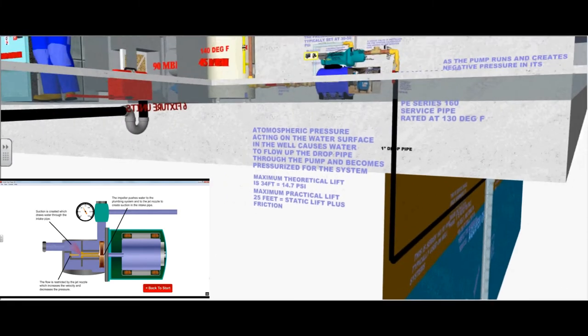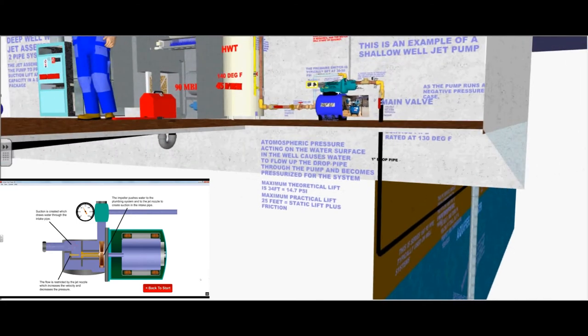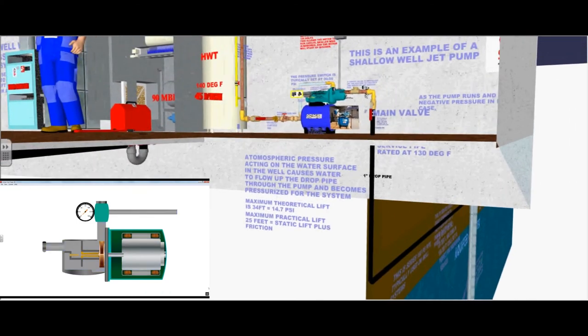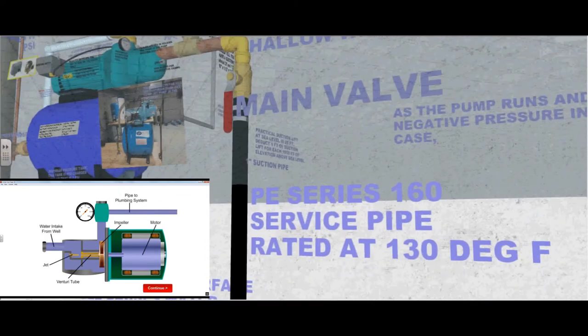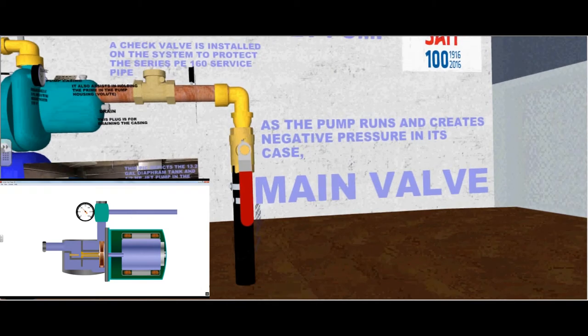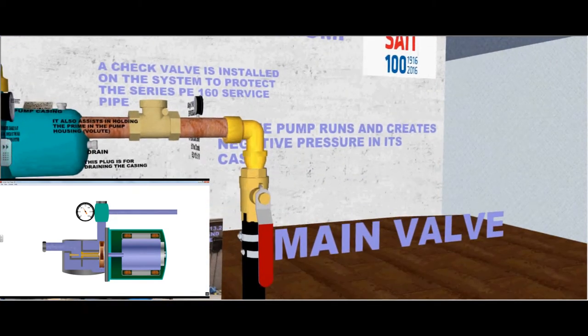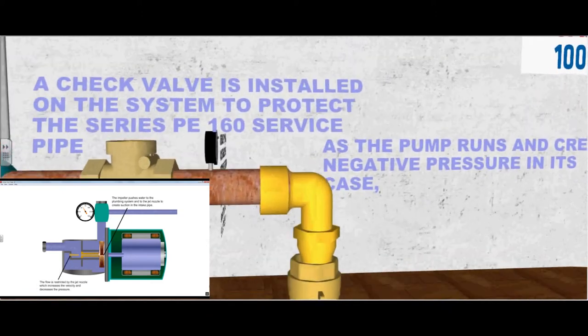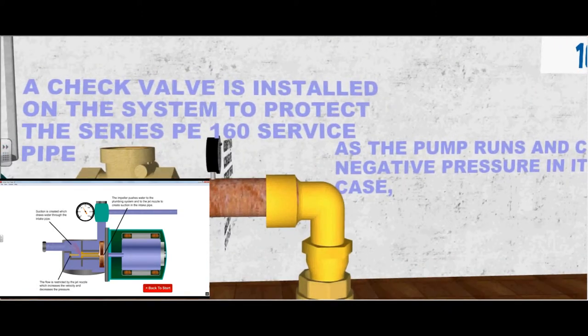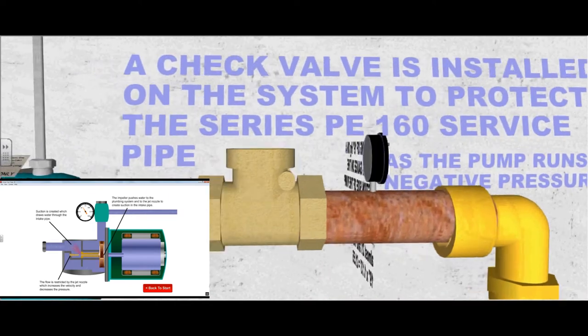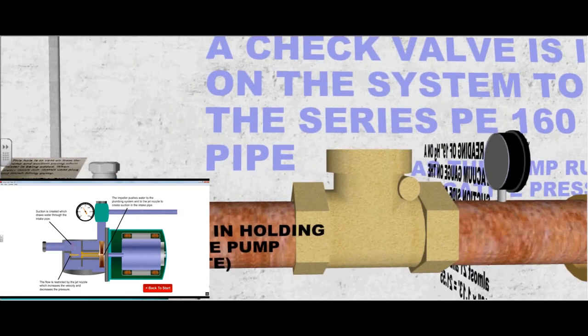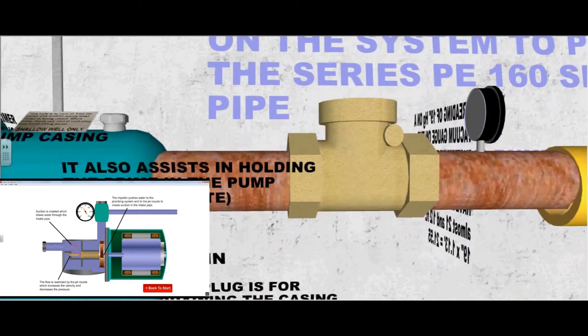There is an example of maximum and practical lift. Here the polyethylene service pipe is double clamped to the main valve. A check valve is installed on the system to protect the service pipe from weakening, especially the clamp. It also assists in holding the prime in the pump housing or the volute.